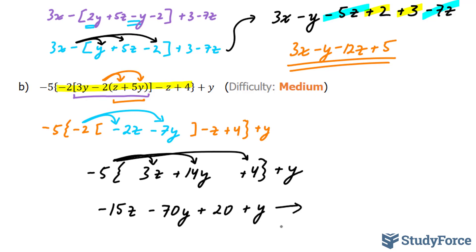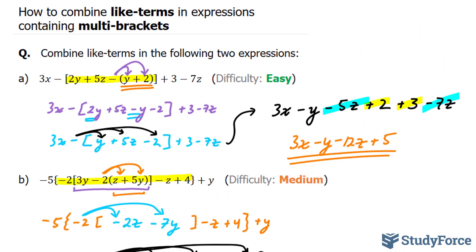To combine these now, only the y's are like terms, so we end up with negative 15z minus 69y plus 20. And so there you have it. That is how to combine like terms in expressions containing multi-brackets.